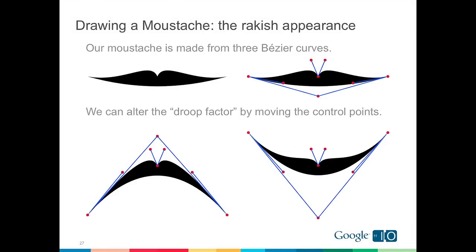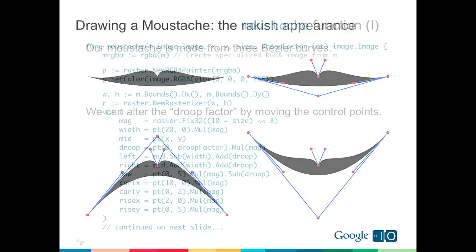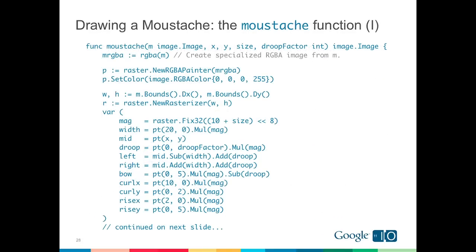To draw our mustache we'll use three Bezier curves, and we'll allow the user to control the droop factor by moving control points. The function to draw the mustache takes an image.Image — Go's internal image format from the standard library — plus x and y coordinates, a size, and the droop factor. At the top, we set up the rasterizer to paint onto our image, then define a block of mathematics for the control points involved in drawing the mustache.